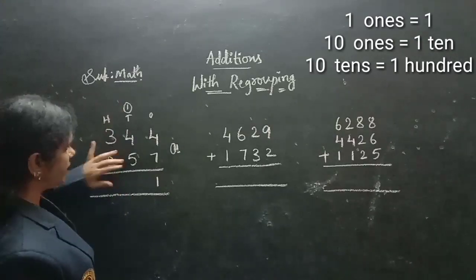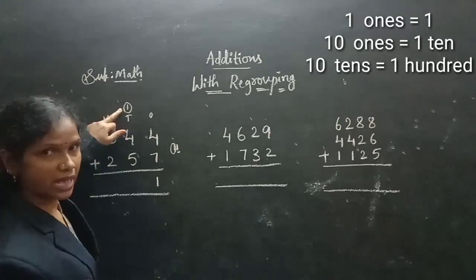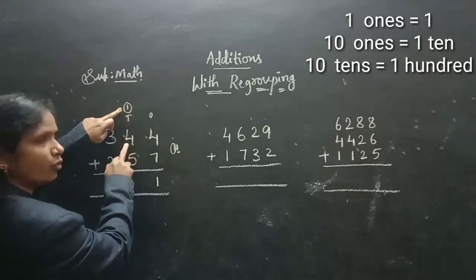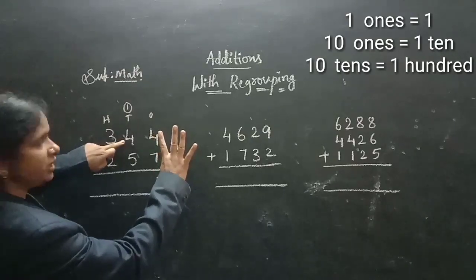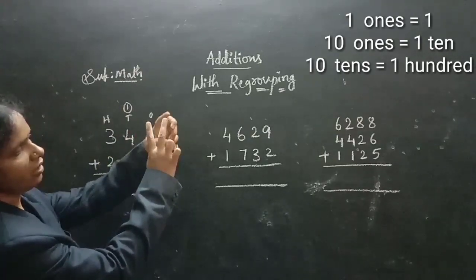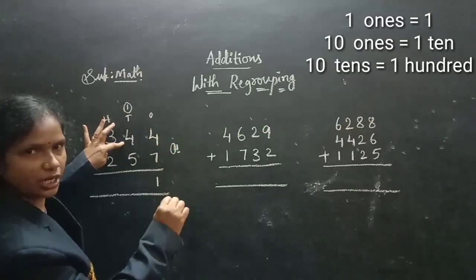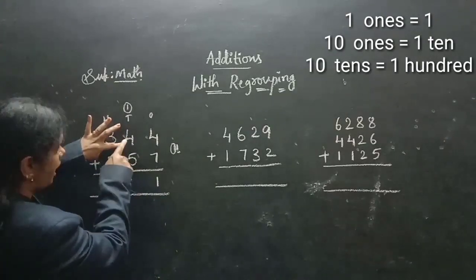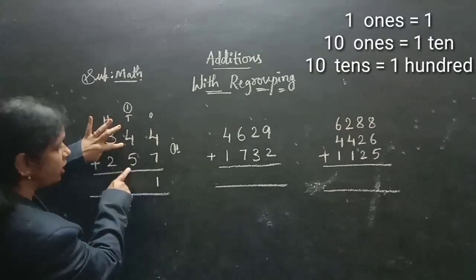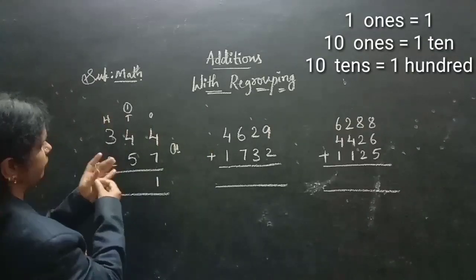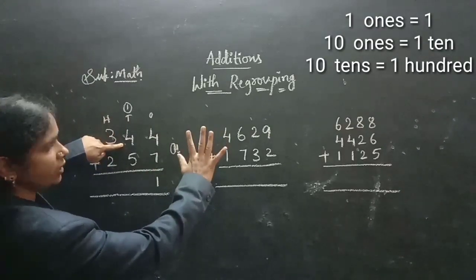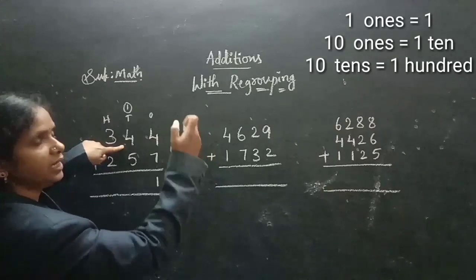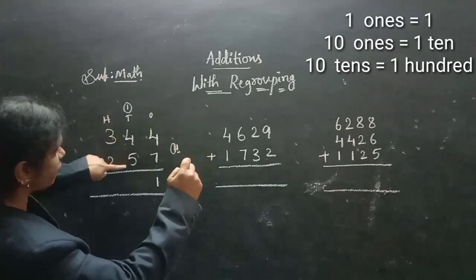Now we need to add the 10's column. So, first you start adding with the carry, children. 1 after 4 — 1 after 4 means 5. Till here we got 5. Again, after 4 we need to take up to 5, then we need to add 5. So 5 after again 5 means 6, 7, 8, 9, 10. So, 5 after again 5 is 10. But 10 is again a 2-digit number, children.